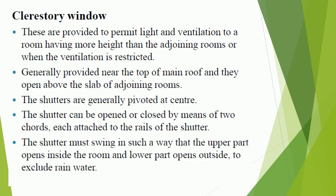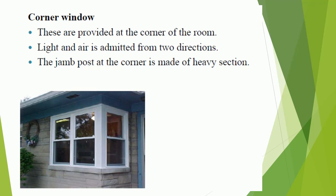Clerestory window: these are provided to permit light and ventilation to a room having more height than the adjoining rooms or when ventilation is restricted. They are generally provided near the top of the main roof and open above the slab of adjoining rooms. The shutters are generally pivoted at the center and can be opened or closed by means of two cords attached to the rails of the shutter. The shutter must swing such that the upper part opens inside the room and the lower part opens outside, to exclude rain water. Corner windows are provided at the corner of the room; light and air is admitted from two directions, and the jamb post at the corner is made of heavy section.